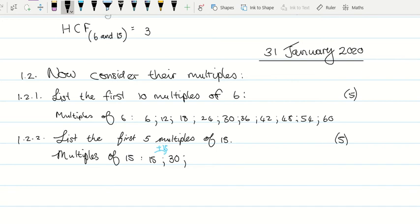If I add another 15, it will be 60, and then 75. That is my first five multiples of 15, so I've answered the question.